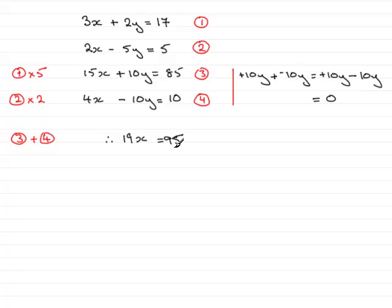We divide both sides by 19. 19x divided by 19 is x, and 95 divided by 19 is 5. So x is 5.